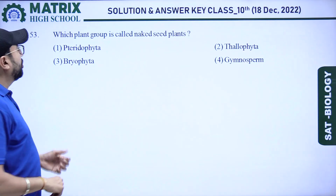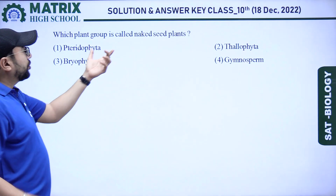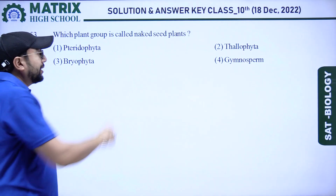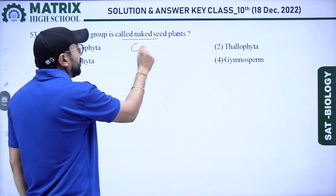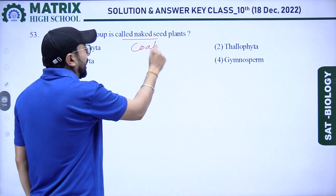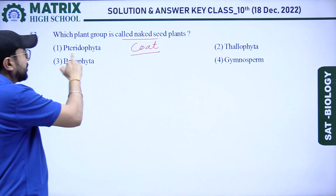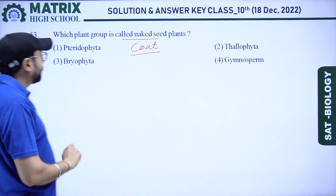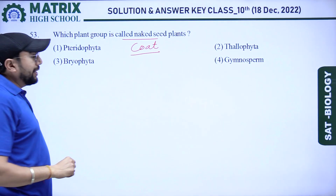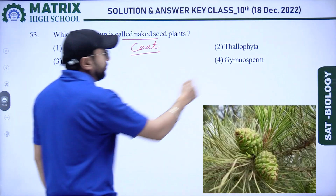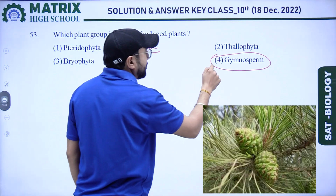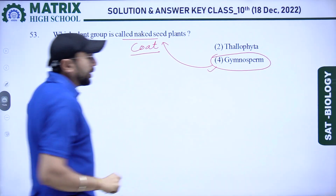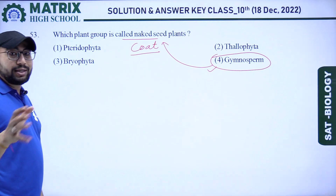Next question: which plant group is called the naked seed plant? Naked seed means without a coat — coat absent. Options: pteridophyta, thallophyta, bryophyta, gymnosperm. Gymnosperm is the right answer because they have no coating over the seed.